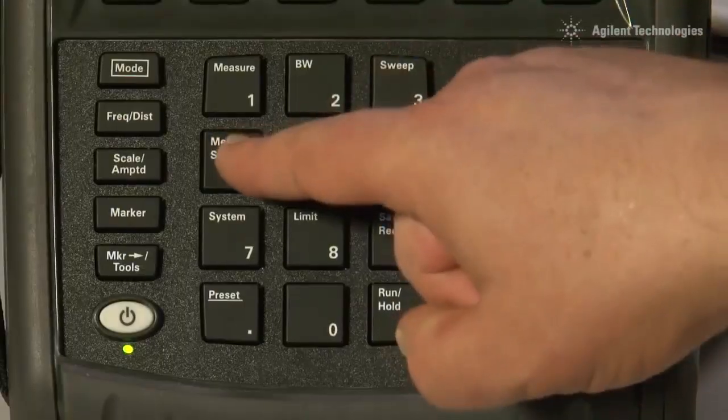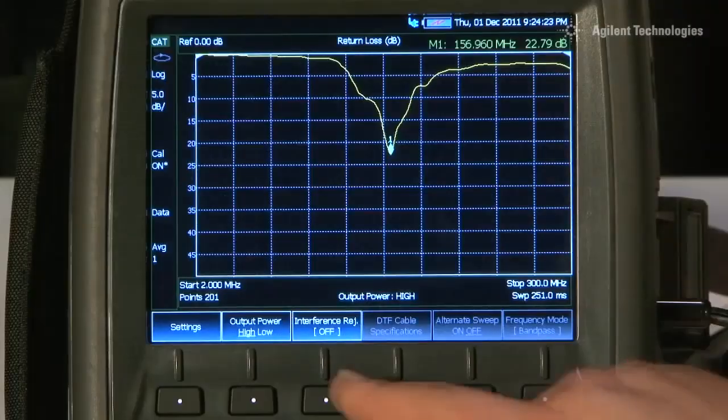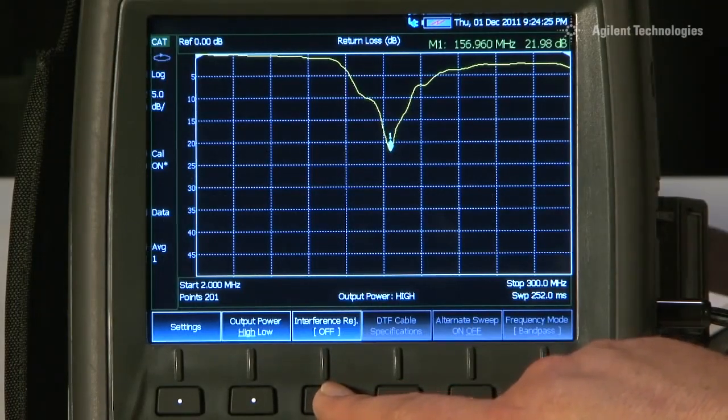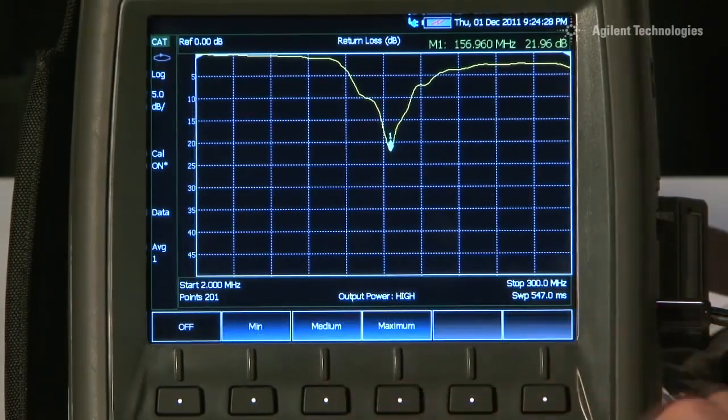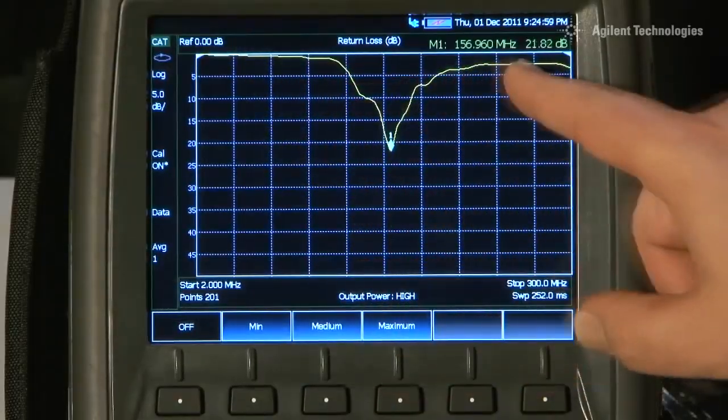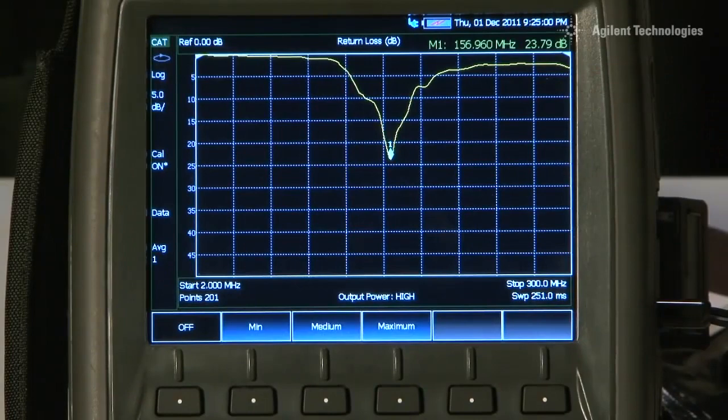On the FieldFox, under the Measurement Setup button, there is a special feature called Interference Rejection. Turning on the Interference Rejection minimizes the chance of having erroneous responses on your Return Loss or VSWR traces.